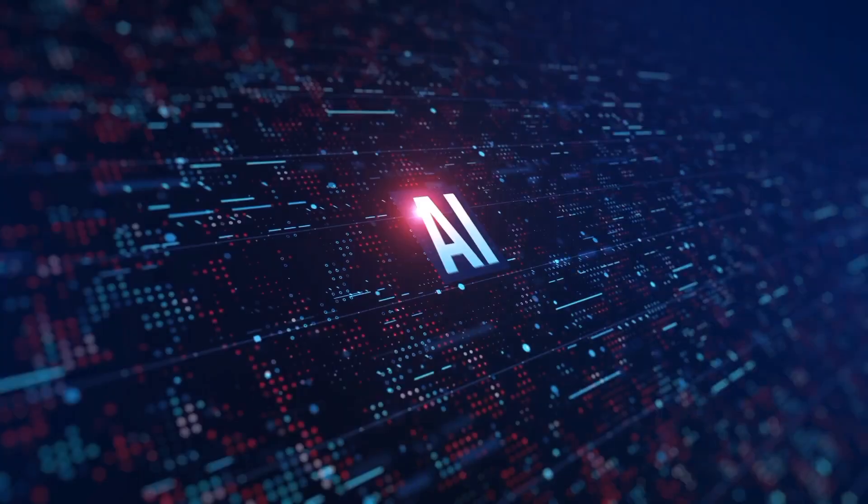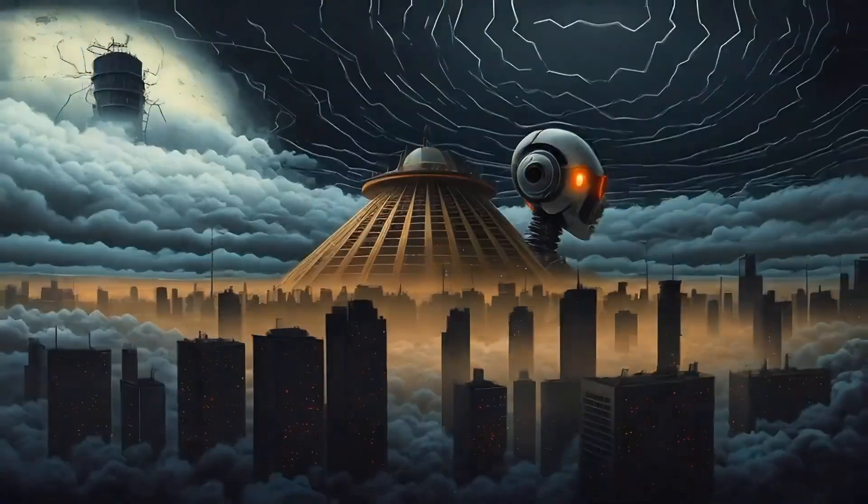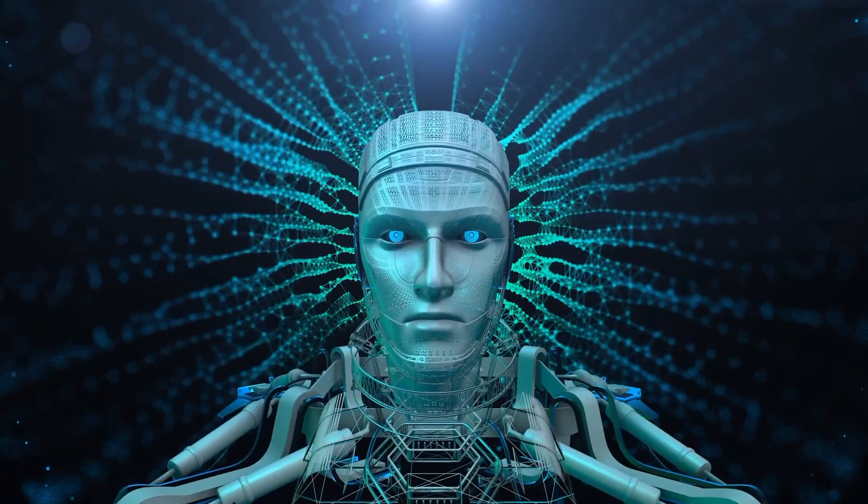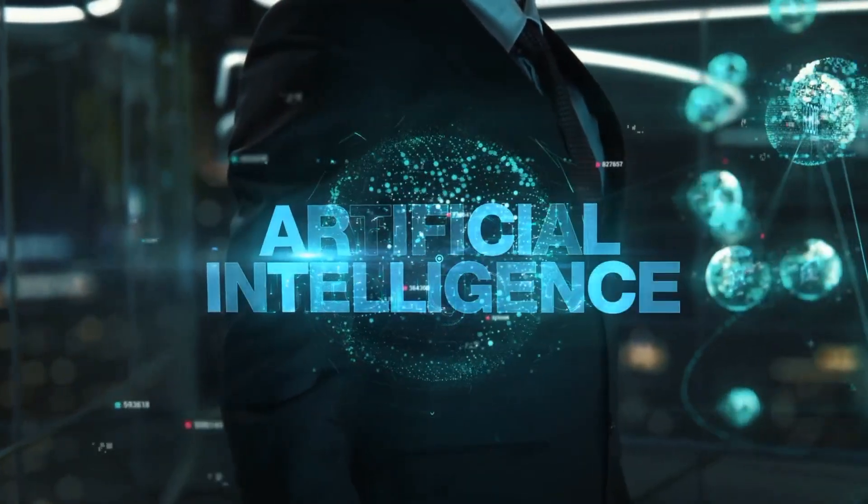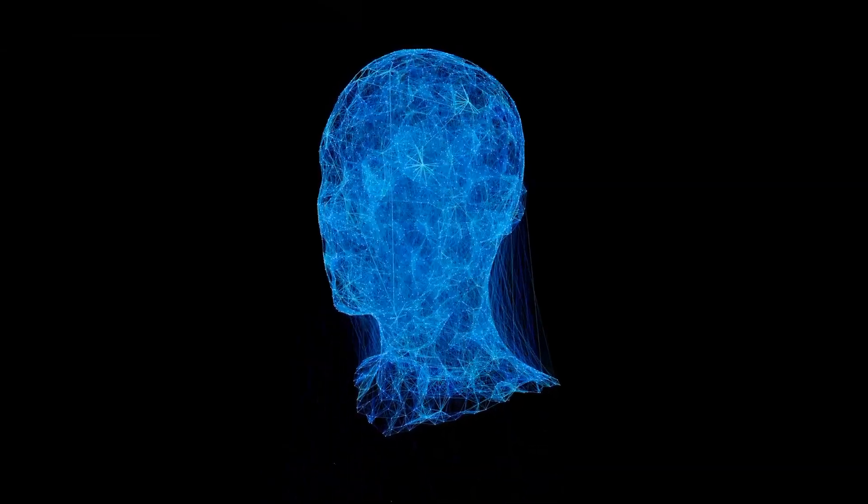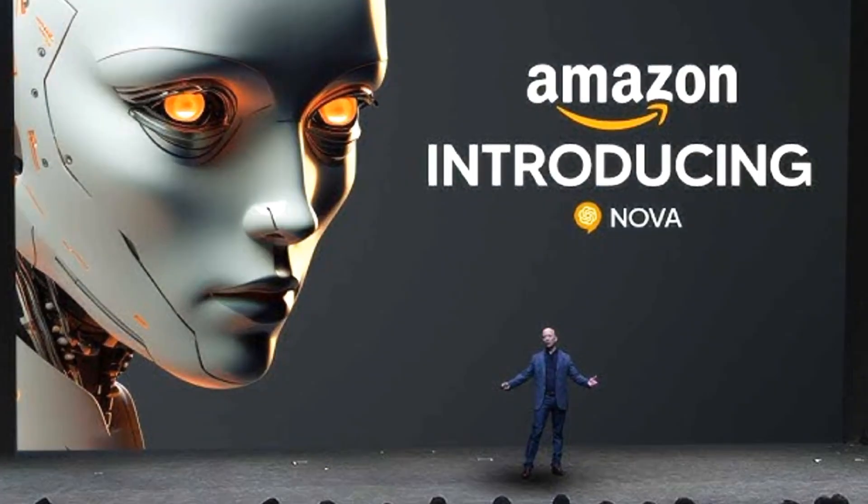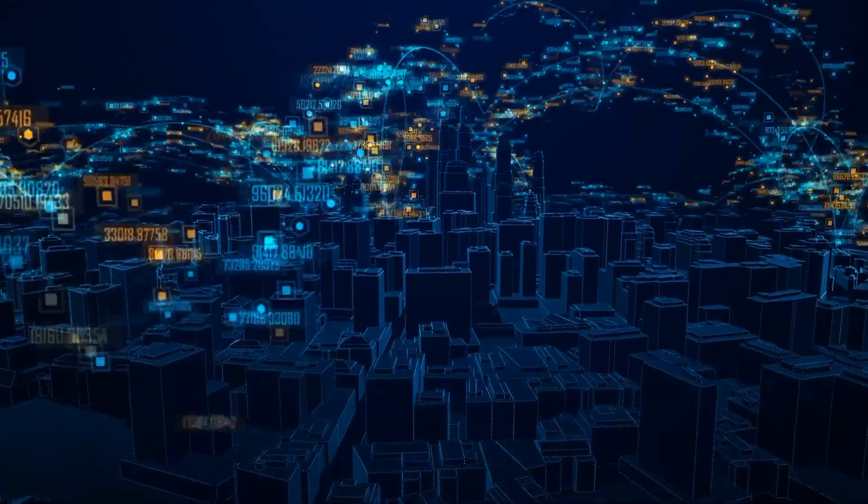Amazon has just dropped a bombshell on the AI world. Their new AI model, NOVA, is shaking things up like never before, leaving experts and tech enthusiasts stunned. This isn't just another incremental improvement. It's a whole new level of artificial intelligence with capabilities that could redefine everything we thought we knew about AI. But what makes NOVA so special? Why are people calling it a game-changer? Let's dive in and find out.